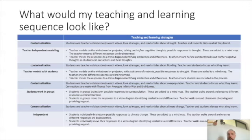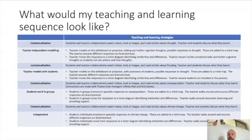What does this look like in terms of a teaching and learning sequence? When I'm teaching, I'm always contextualizing the geographical challenge for the learners — whether it's drought, flooding, overpopulation, or climate change. Whether I'm individually modeling my cognitive thoughts, students are working in groups, or working independently, they're developing a mind map identifying possible responses to that geographical challenge, ensuring they look at a diverse range of perspectives. Then they take that information and put it in a Venn diagram with the similarities and differences. If they can do that, they're at standard.